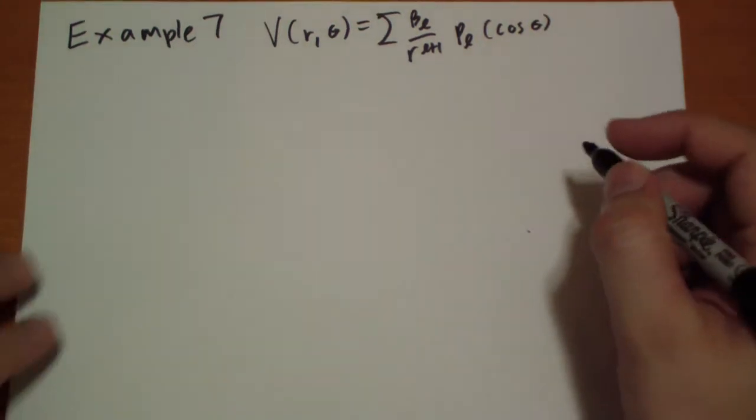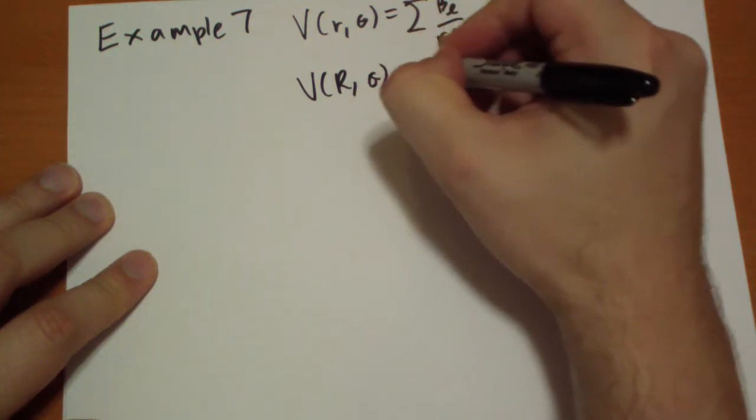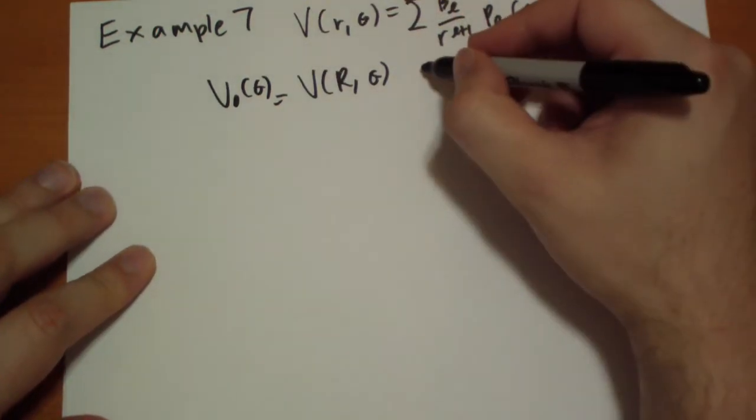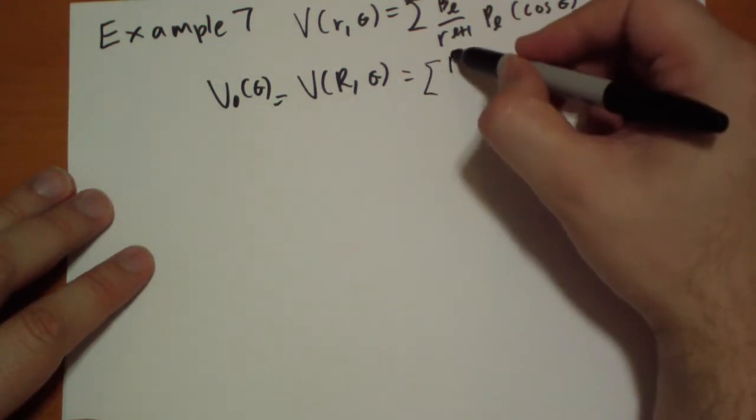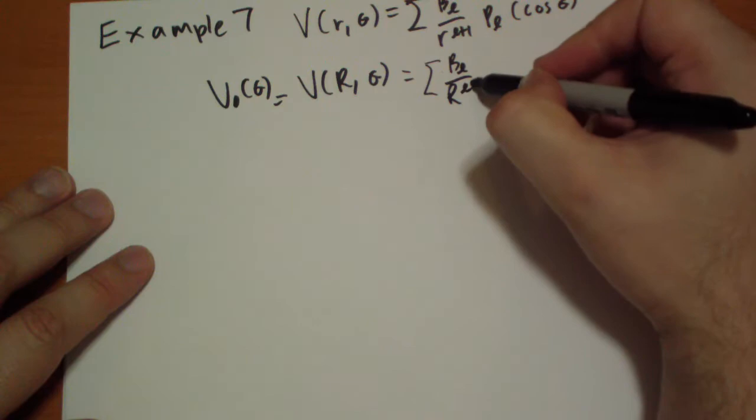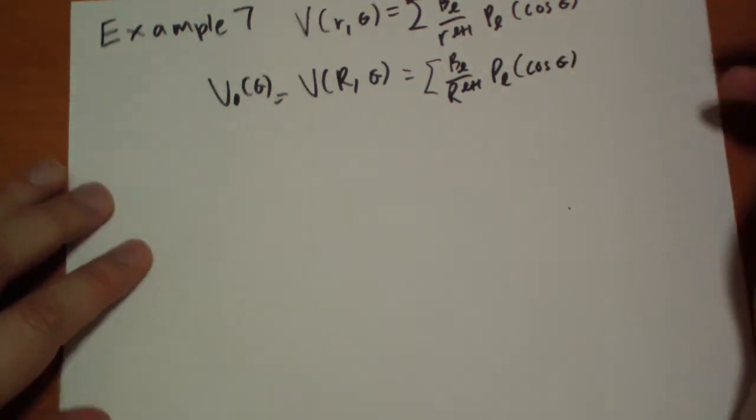So at the surface, we're required to satisfy that V_0. So V of R comma theta is going to be V_0 of theta. That has to be equal to B_L over R to the L plus 1 P_L cos theta.